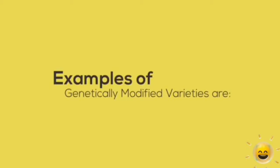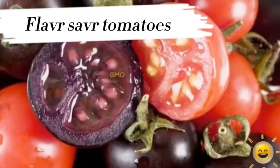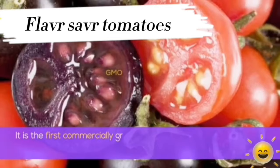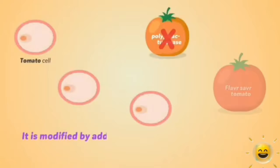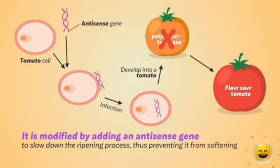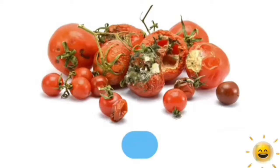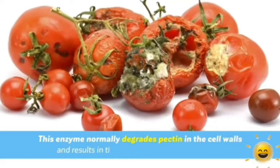Examples of genetically modified varieties are Flavr Savr Tomatoes. It is the first commercially grown genetically modified food to be granted a license for human consumption. It is modified by adding an antisense gene to slow down the ripening process, thus preventing it from softening. The antisense gene interferes with the production of the enzyme Polygalacturonase.